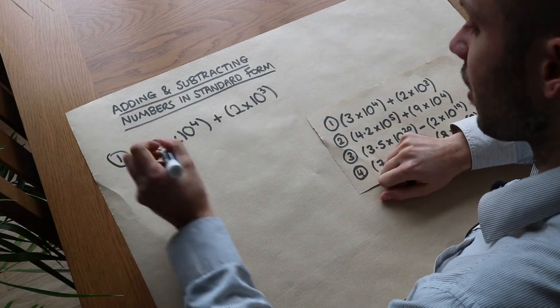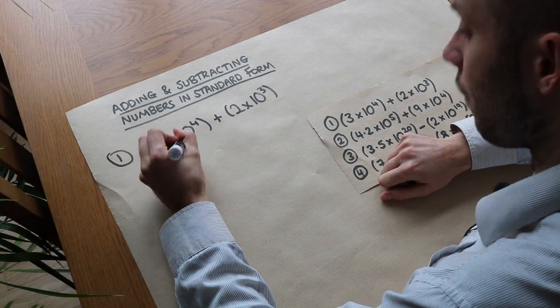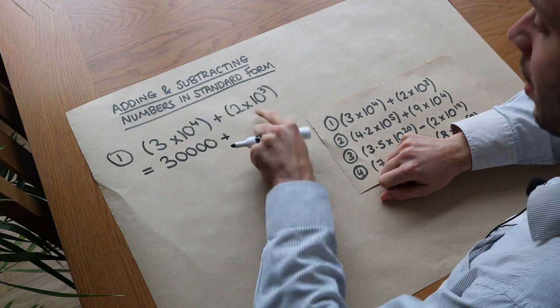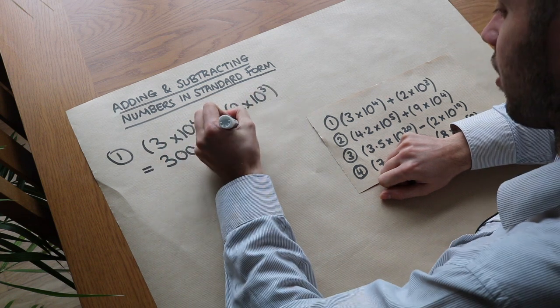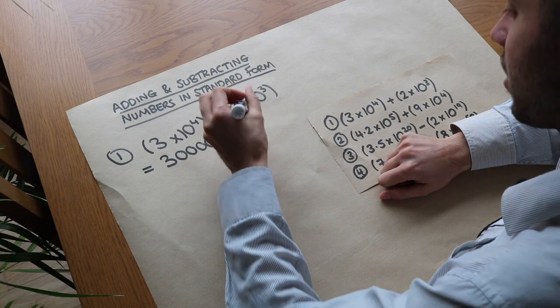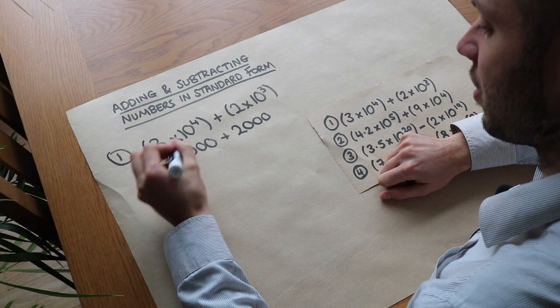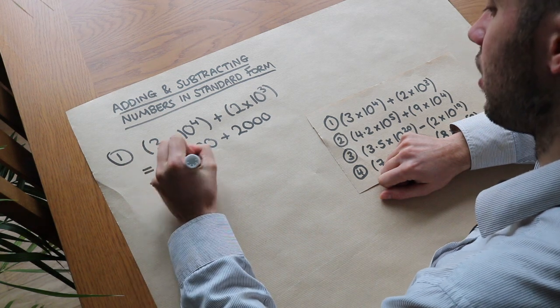So 3 times 10 to the 4, that's 3 with 4 zeros on the end, plus 2 with 3 zeros on the end because we're multiplying by 10 three times. Then we just add them together. So 30,000 plus 2,000 is clearly 32,000.